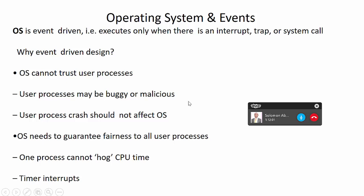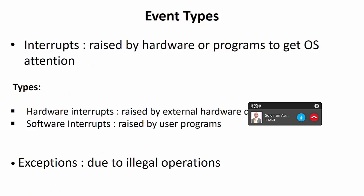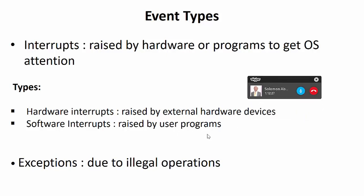Moving to slide 3, event types: interrupts arise from hardware or programs to get the operating system's attention. We have hardware interrupts raised by external hardware devices, and software interrupts raised by user programs. We also have another type of event called exceptions, which are due to illegal operations.